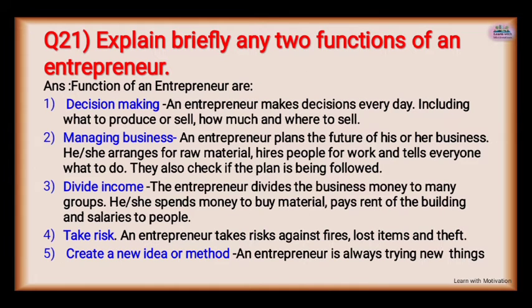Explain briefly any two functions of entrepreneur. There are many functions but we discuss a few. Number one, decision making: an entrepreneur makes decisions every day, including what to produce or sell, how much, and where to sell. Number two, managing the business: an entrepreneur plans the future of the business, arranges for raw material, hires people for work, tells everyone what to do, and checks if the plan is being followed.